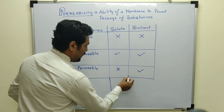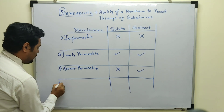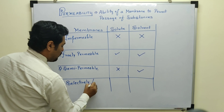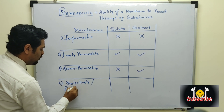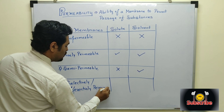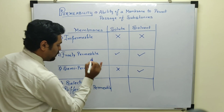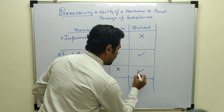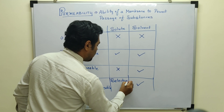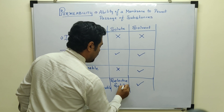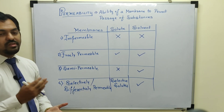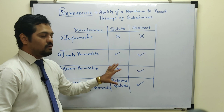The last type is known as the selectively permeable membrane, also called the differentially permeable membrane. This type allows the solvent but among solutes, it allows only certain selective solutes. Not every solute gets entry — only selective solutes are allowed. This is the most important type for entrance exams.